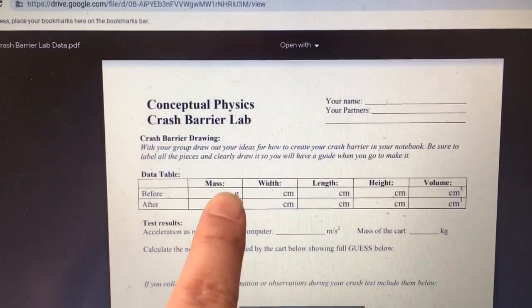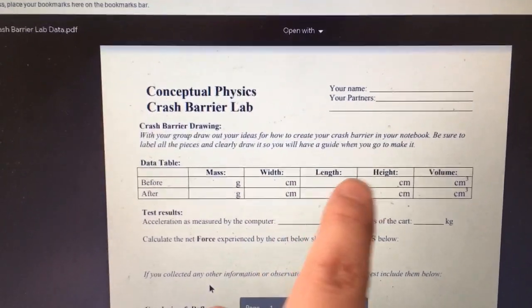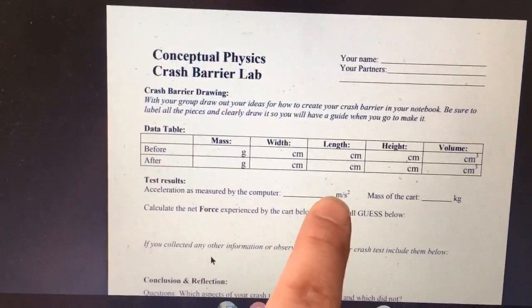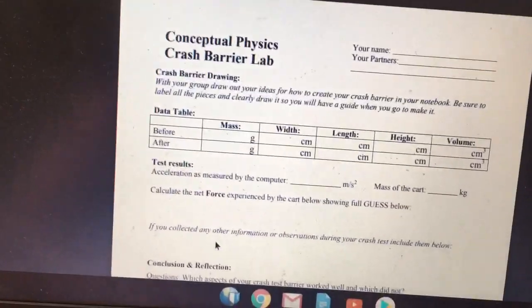So before the collision, the mass, width, length, height, and then volume of your crash barrier, and then after. And then you can put your data here for those other things.